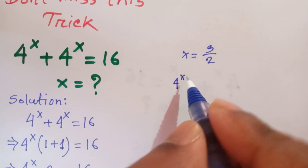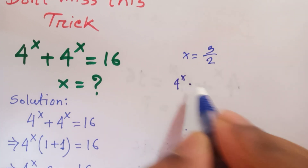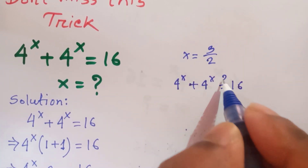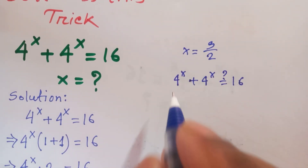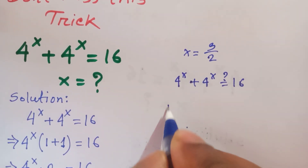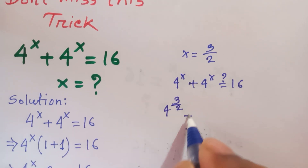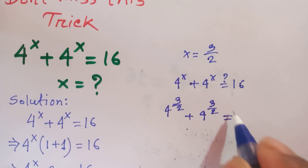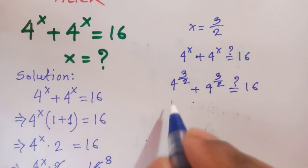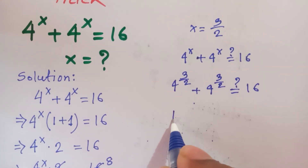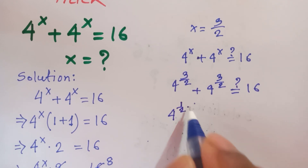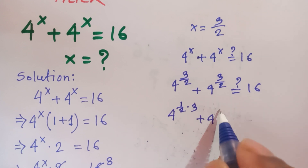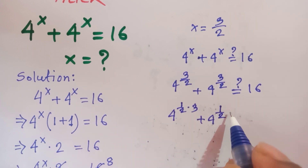Now we verify: the original equation 4 to the 4x plus 4 to the 4x equals 16. We put x equal to 3 over 2, so 4 to the 4 times (3 over 2) plus 4 to the 4 times (3 over 2) should give 16. This can also be written as 4 to the (1 over 2) times 3.